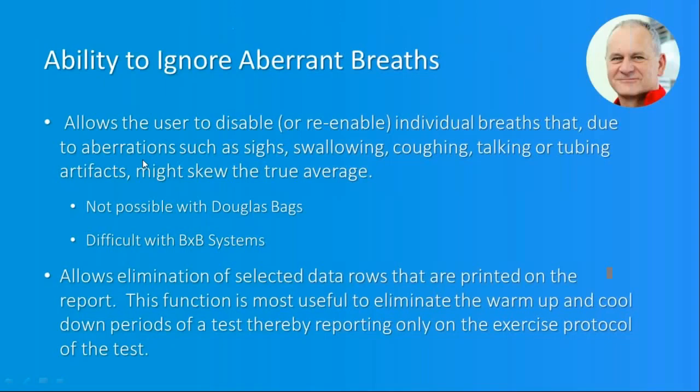One of the most important aspects of the Moxis system is its ability to remove aberrant breaths or any data with issues. Aberrant breaths would include sighs, swallowing, coughing, or other real-life value issues that occur when measuring people. This is impossible with Douglas bags, where all of the sample is taken into the bag, and is very difficult with breath-by-breath systems. The Moxis system allows you to eliminate rows of data you don't want to include because you can see they have issues.